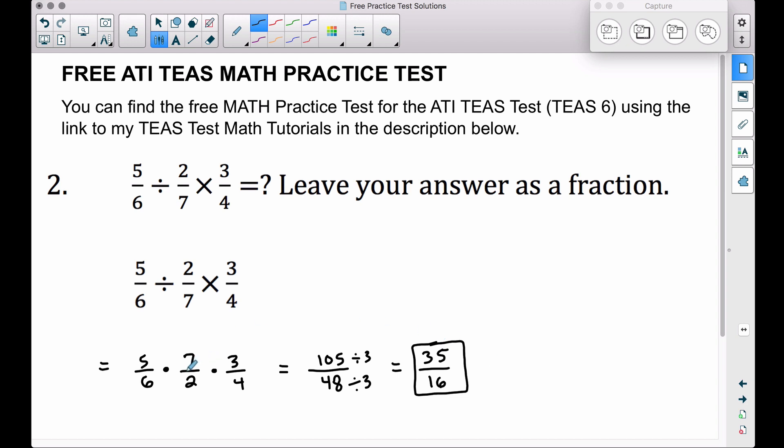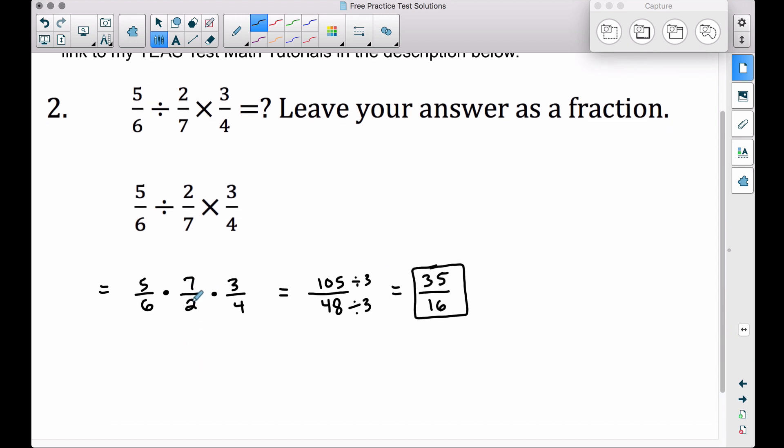Now one more way I want to show you this is looking at this part right here and what we could have done before we multiplied and got the 105 over 48. If you look at your top numbers and your bottom numbers, a shortcut with multiplying fractions is that if you can divide anything before you do the multiplication. For example, I can divide this by 3 and I get 1. I can divide this 6 by 3 and I get 2.